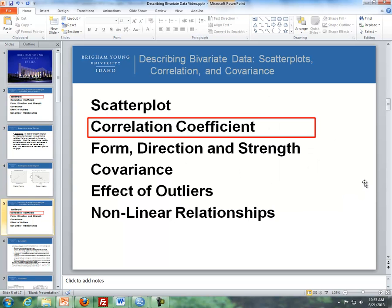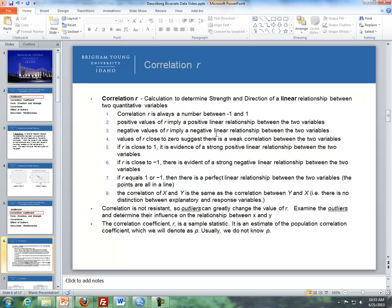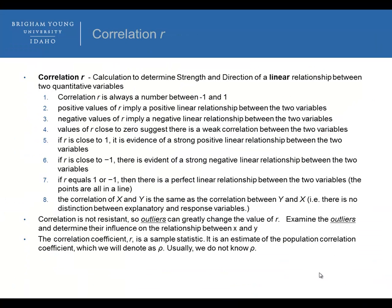The next thing I want to talk about is a correlation coefficient. Correlation, or R, is a calculation to determine the strength and direction of a linear relationship between two quantitative variables. Here are eight items you should know about correlation. First, R is always a number between negative one and one. Positive values of R imply a positive linear relationship, and negative values of R imply a negative linear relationship. Values of R close to zero suggest there is a weak correlation between the two variables.